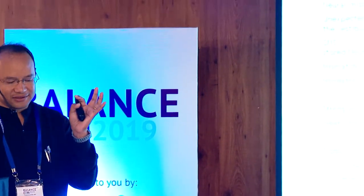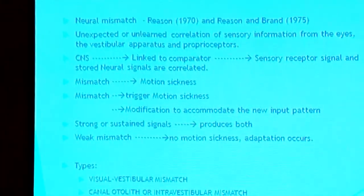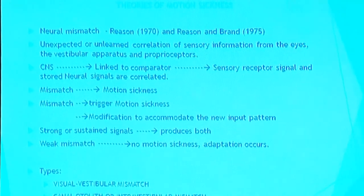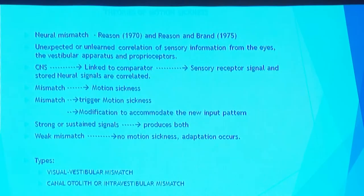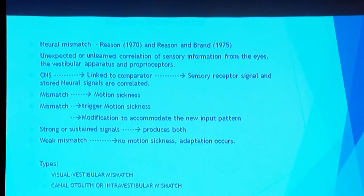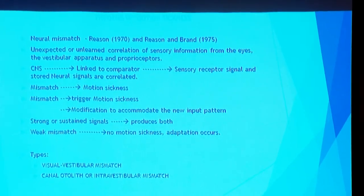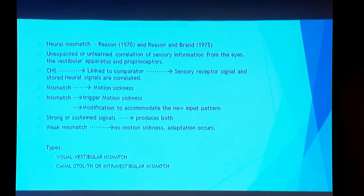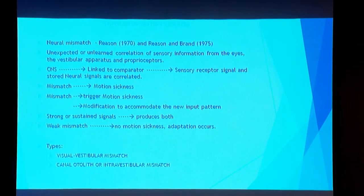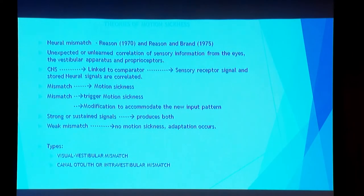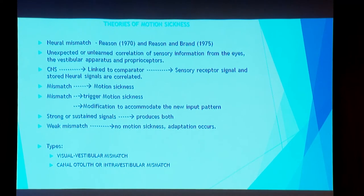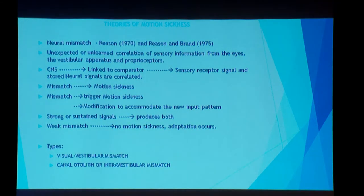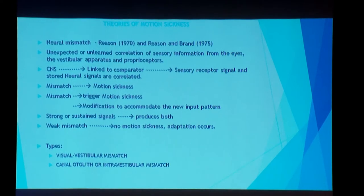Within the central nervous system, there is a memory bank linked to comparators. Signals from sensory inputs are sent to these comparators and correlated with stored information from previous experience — the neural store. They are sent back to the bank, and if there is a mismatch, it manifests as motion sickness. If there is no mismatch, you have no symptoms.